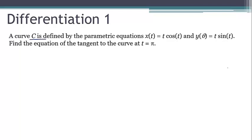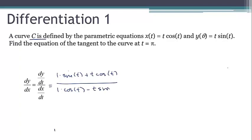We can get the slope easily enough using our new formula. dy/dt is one times sine of t plus t cosine of t, and dx/dt is one times cosine of t minus t sine of t.